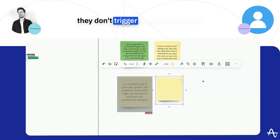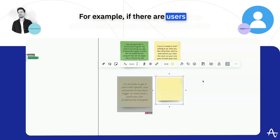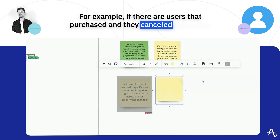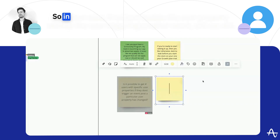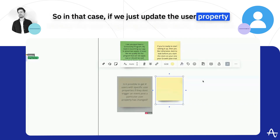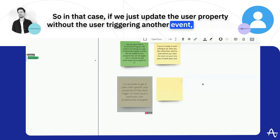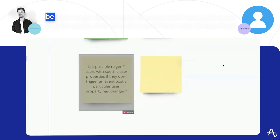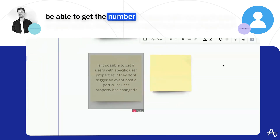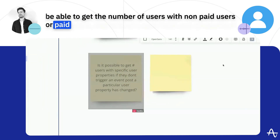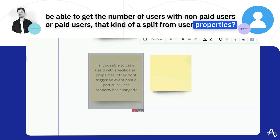For example, if there are users that purchased and then canceled soon after — in that case, if we just update the user property without the user triggering another event, will we still be able to get the number of non-paid users or paid users? That kind of a split from user properties.